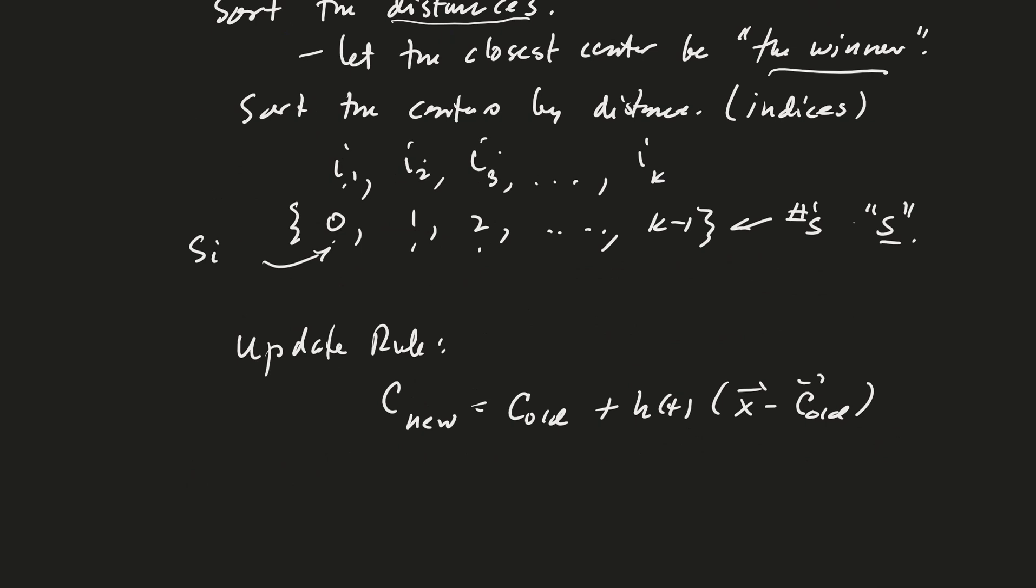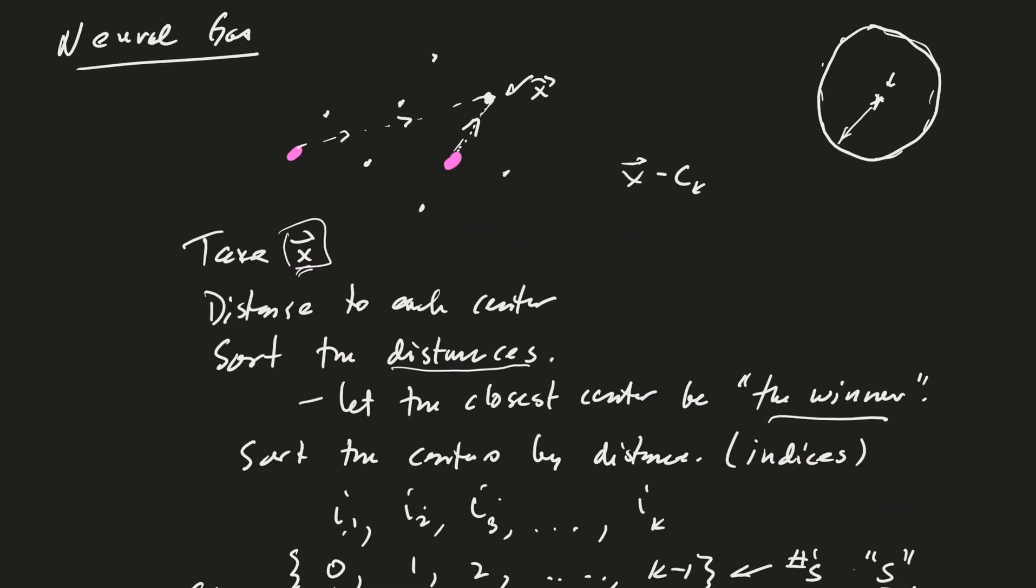Now we're going to go ahead and maybe I should just go ahead and write down the update rule. So the generic update rule that we're going to use is that the new cluster center is going to be the old cluster center, plus some function of T, and then we're going to move it in the direction of X minus C. So just as a reminder, what did that look like on our picture? You're starting here, and you're moving towards the vector X.